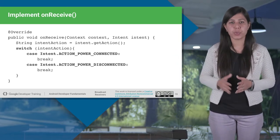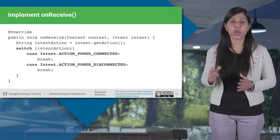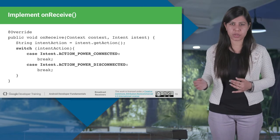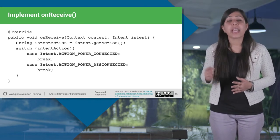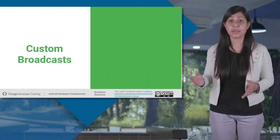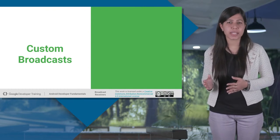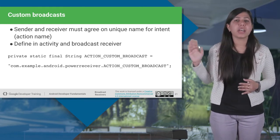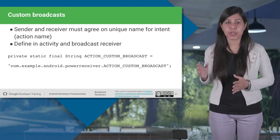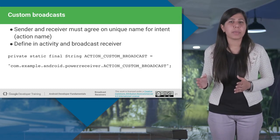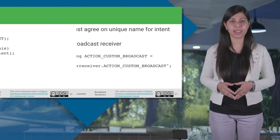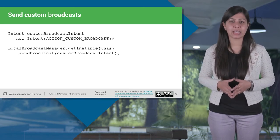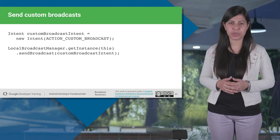The onReceive method takes two arguments: the context object, which you can use to access additional information or to start services or activities; and the intent object with the action you can use to register your receiver. For custom broadcasts, the action string which identifies the broadcast event must be unique and typically uses the application's Java package name syntax — for example, a broadcast intent including a unique action string with the package name as a prefix. This action needs to be described in both the activity and the broadcast receiver. Here is how you attach the action using custom intents.